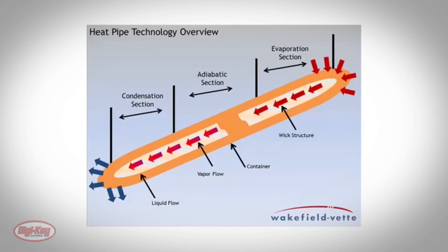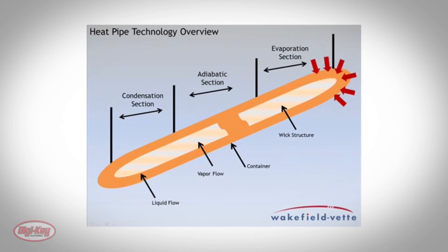As heat is applied to the heat pipe, the water will boil and turn to gas, which will move to the coldest section of the heat pipe, where it condenses back to a liquid. The performance of a heat pipe is a function of its length, diameter, wick structure, and overall shape.